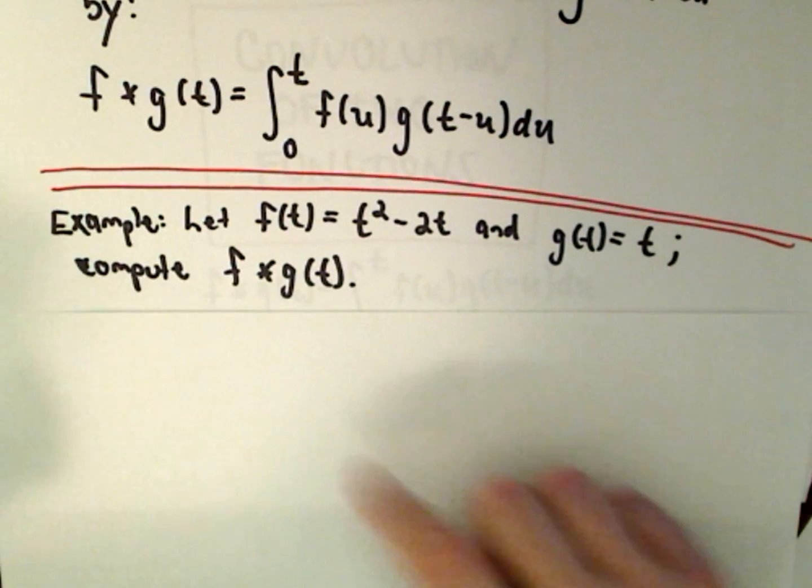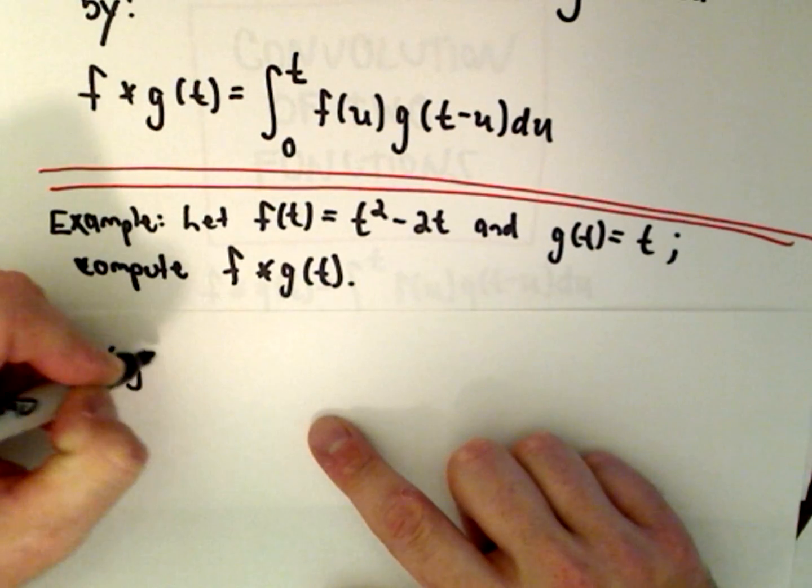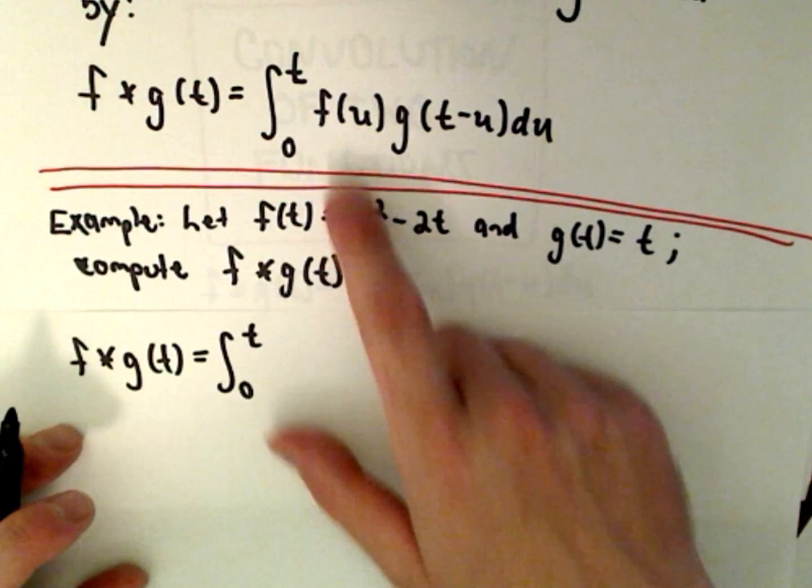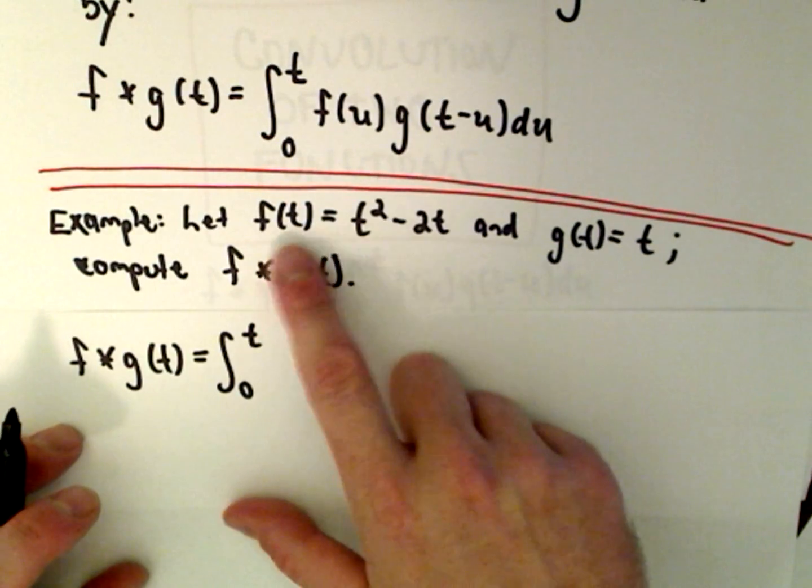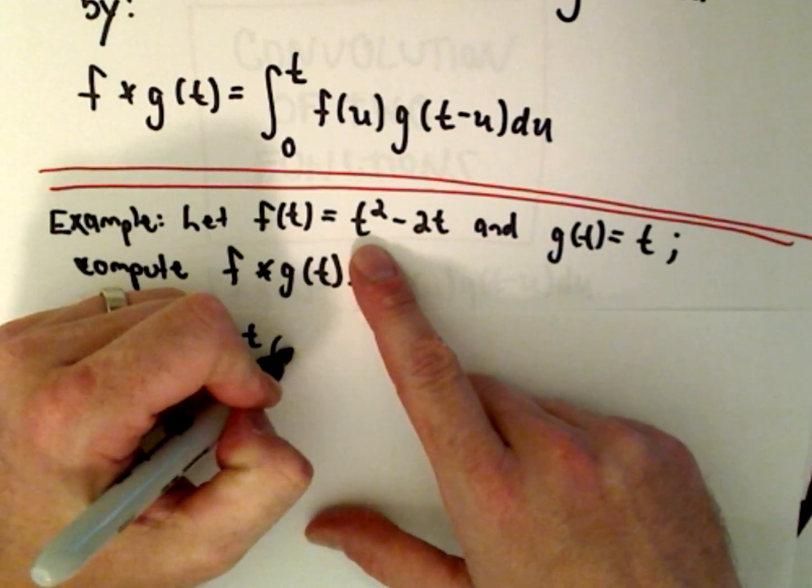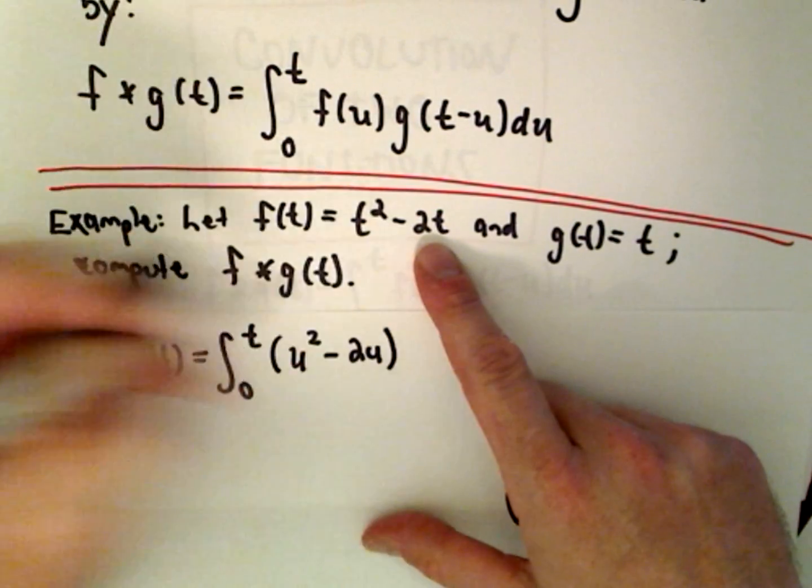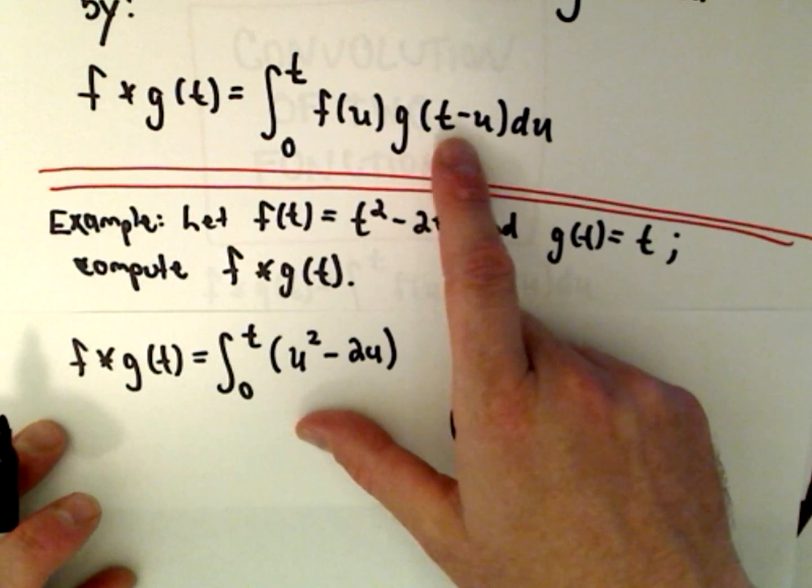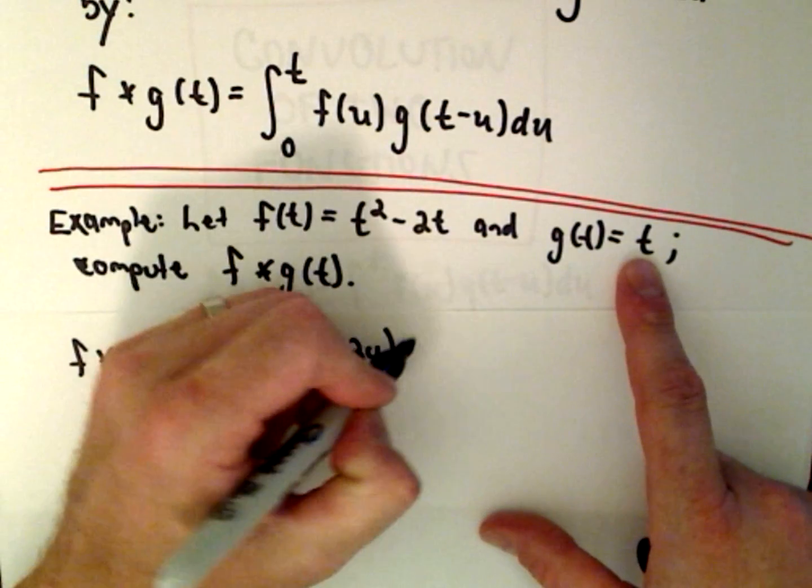So f star g of t: we're going to integrate from 0 to t. We just take our original function and plug in the variable u, so in that case we're going to have u squared minus 2 times u. And then we take our function which was originally a function of t, and everywhere we have a t we replace it with t minus u. Well g of t is just t, so I'm going to replace it with t minus u.